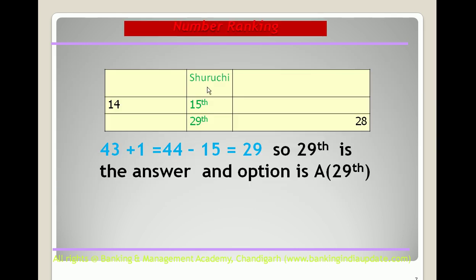The student is at the 15th position from one end, meaning 14 people are before her, and there are 43 people in total. Using the shortcut: 43 + 1 = 44, then 44 − 15 = 29. So the answer is 29th, option A. Alternatively: 14 people before her, 1 position for herself, and 28 after her; position from the other side is 28 + 1 = 29th.